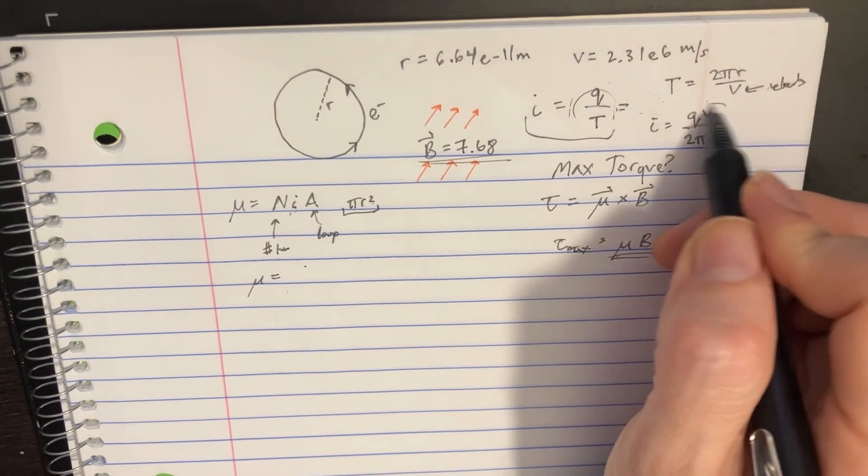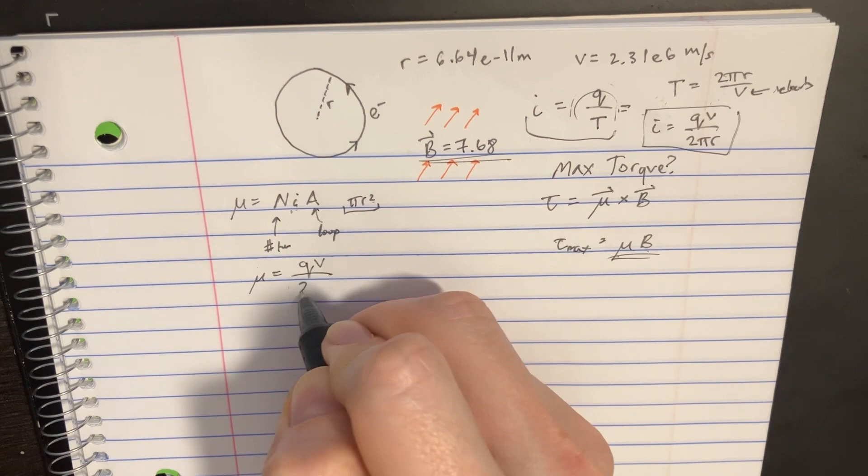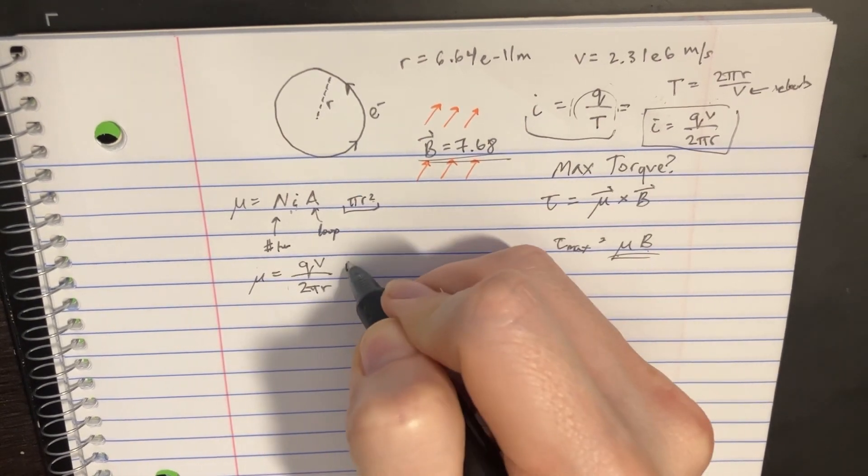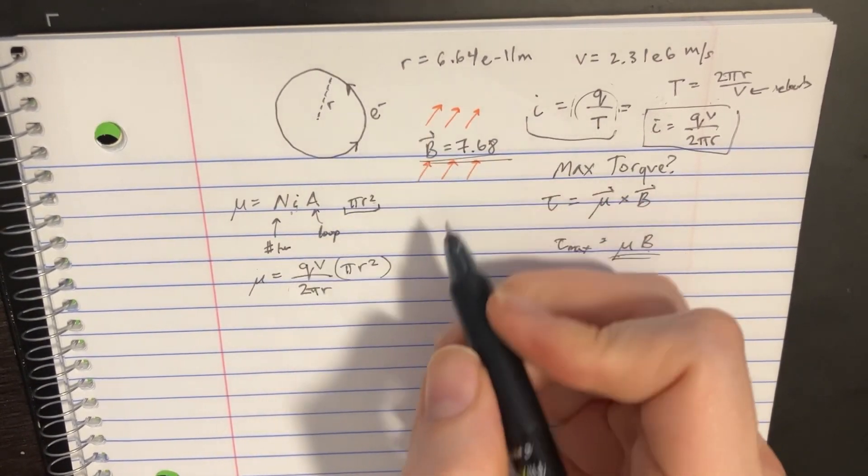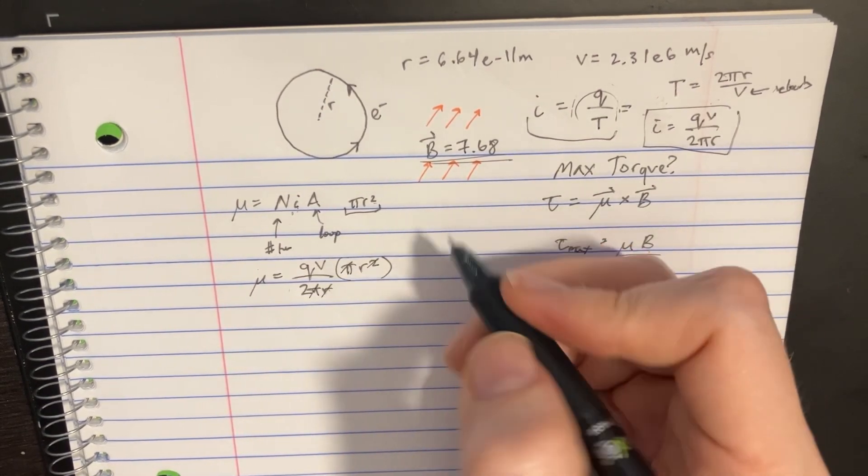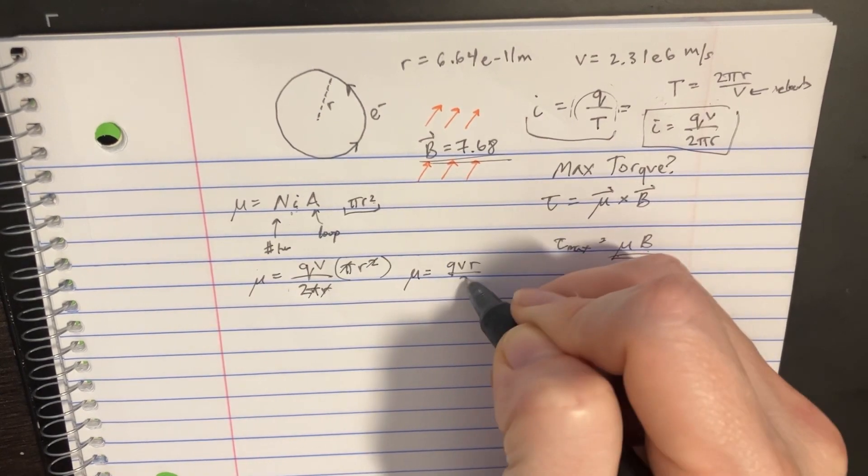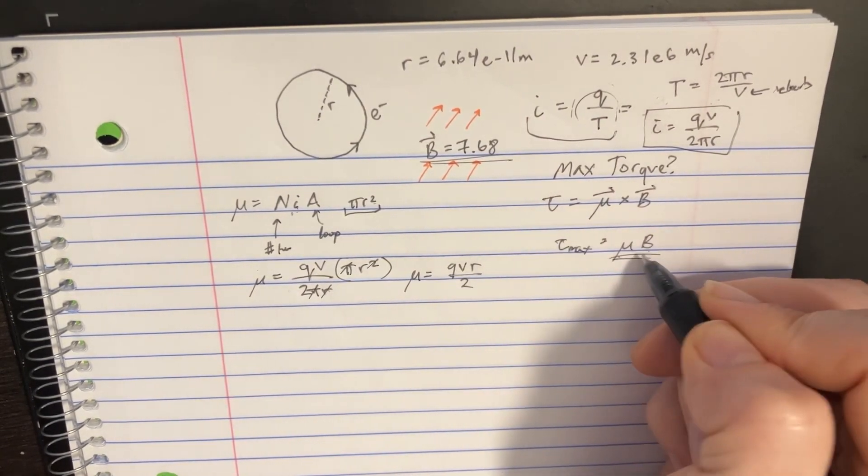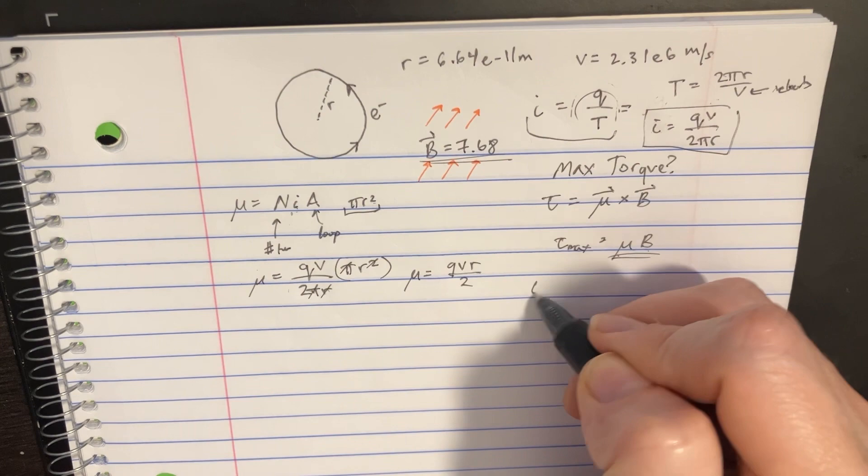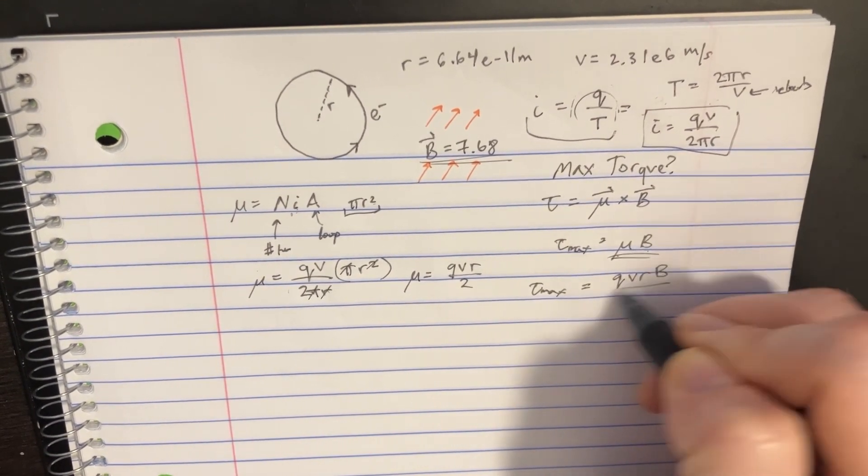Now we can plug this in: qv divided by 2πr times πr squared. The π's cancel, the r's simplify, and we're left with mu equals qvr over 2. Multiply that by B to get tau max equals qvrB divided by 2.